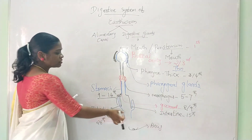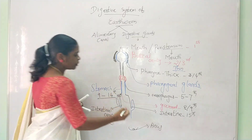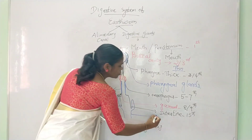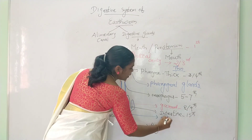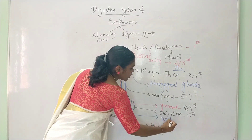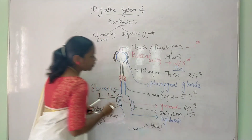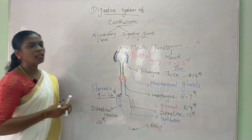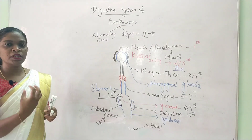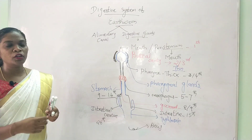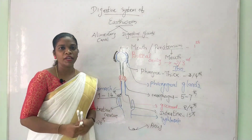In the dorsal region of the intestine, there is a structure called the Typhlosole. The Typhlosole is present from about the 26th segment and functions to increase the absorption area for nutrients.